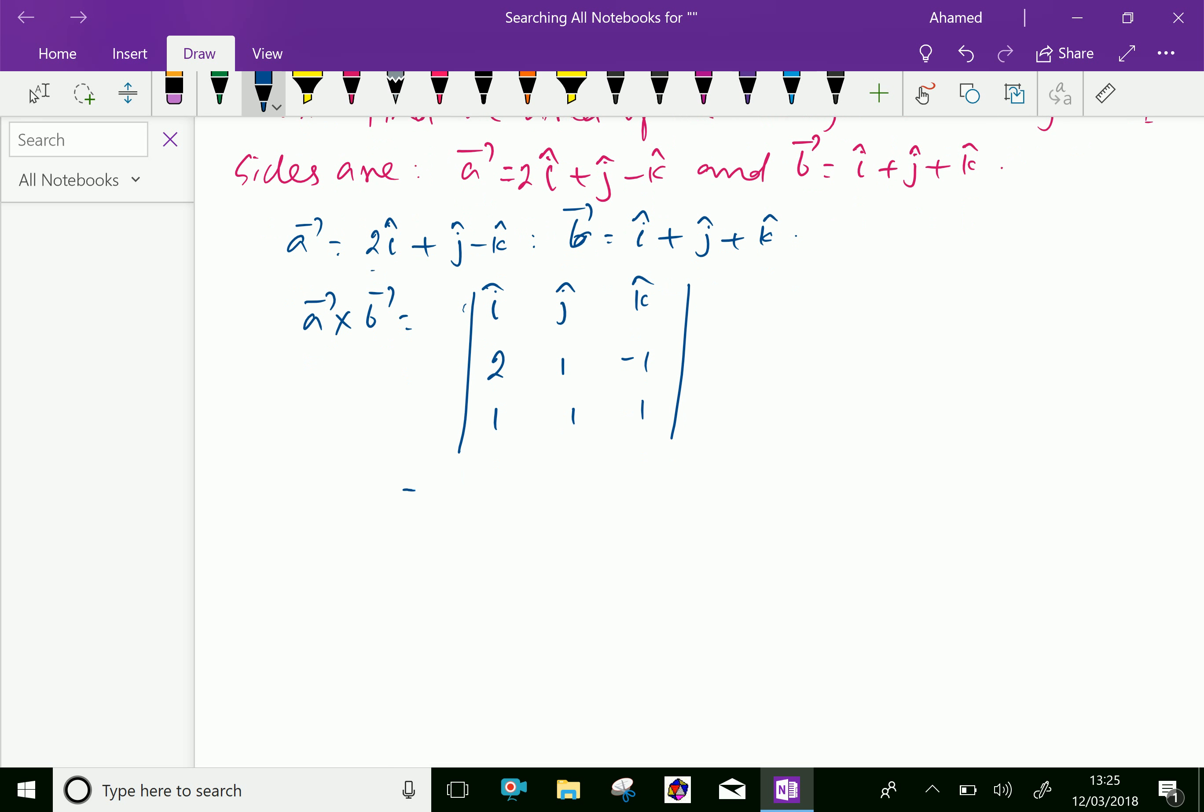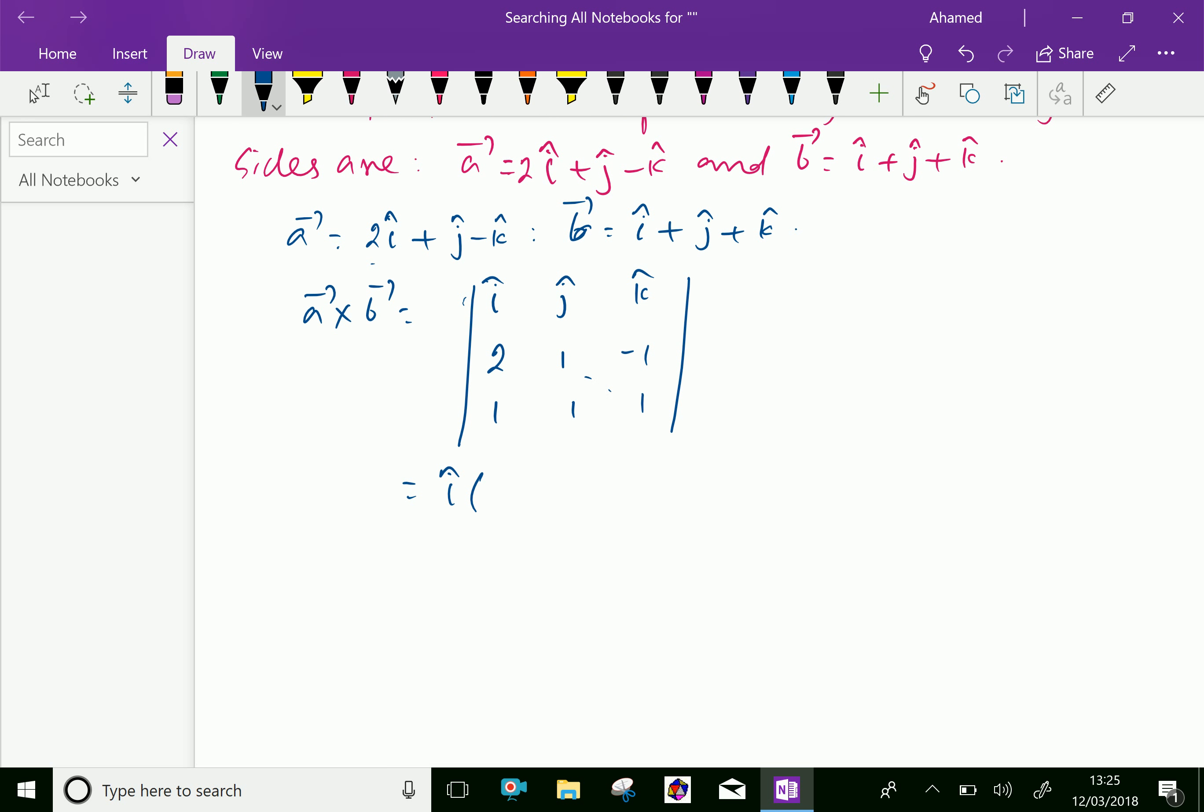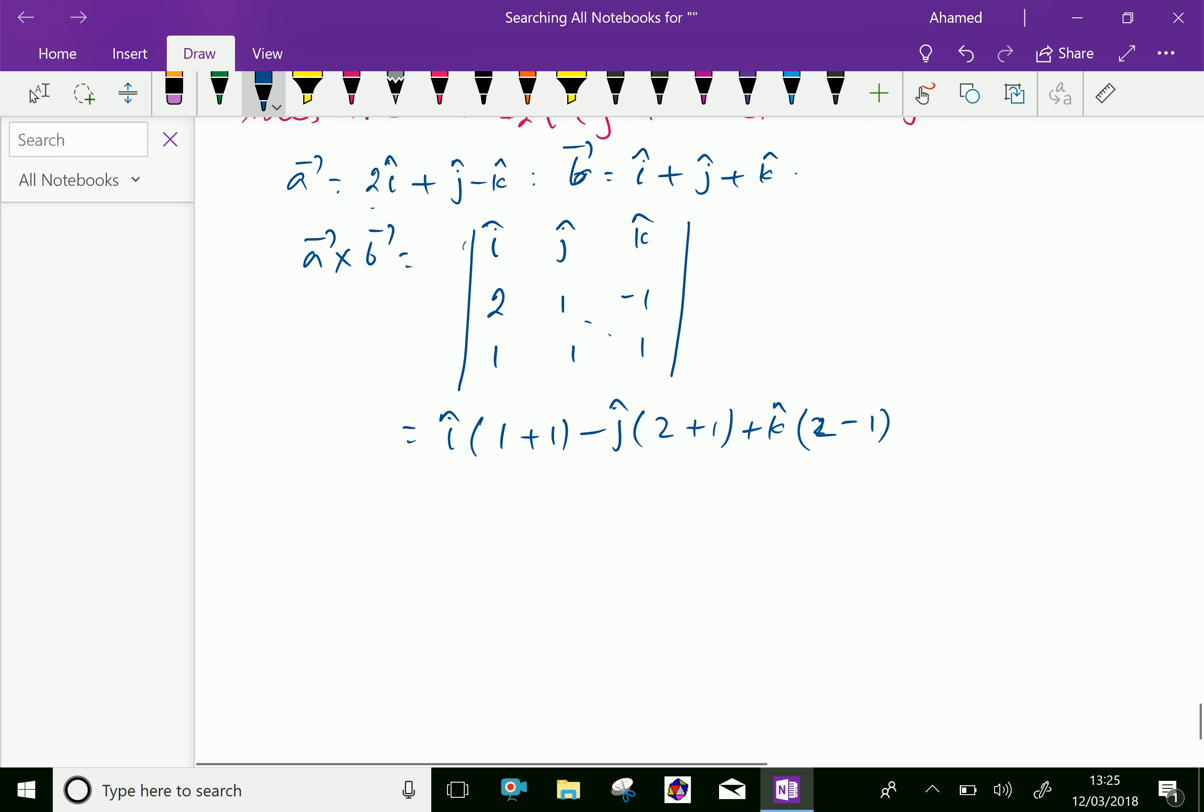Let us find the determinant equal i into 1 into 1 is 1, 1 into minus 1 is minus 1, minus 1 minus is plus 1, minus j. j is 2 into 1 is 2, 1 into minus 1 is minus 1, that plus 1. Plus k is 2 into 1 is 2, minus 1 into 1 is 1. We have 1 plus 1 is 2, that is 2i and 2 plus 1 is 3, that is minus 3j and 2 minus 1 is 1, that is k.